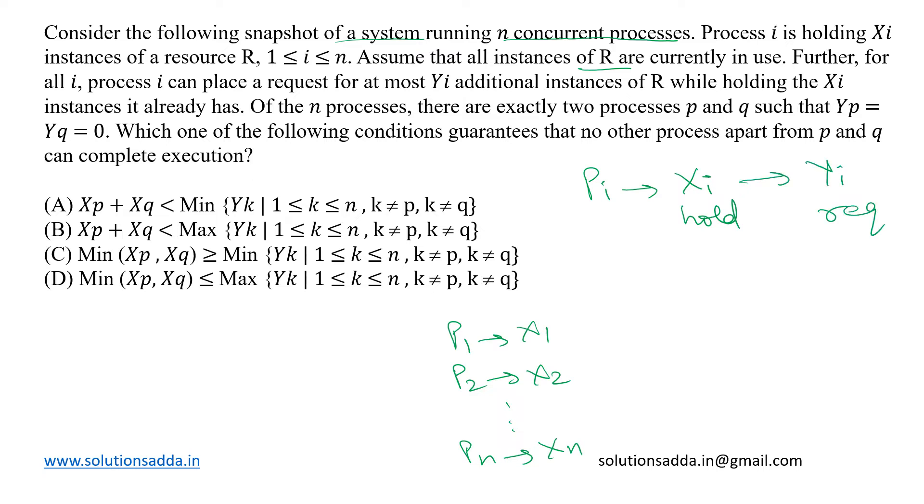Now, we know that with this, P1 will request for Y1 resources, P2 will request for Y2 and so on. PN will request for YN additional resources. But every process PI can execute only when it has acquired the total of XI plus YI instances because XI it has already held and YI it has requested. Once it has this total number of instances, then only it can execute and after execution, it can release those resources back for others to use.